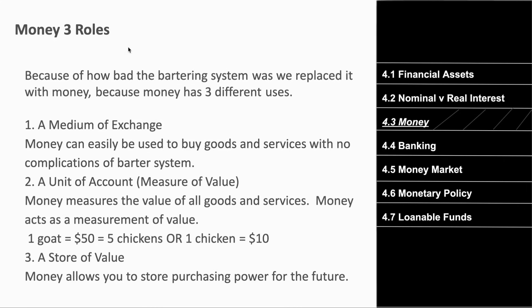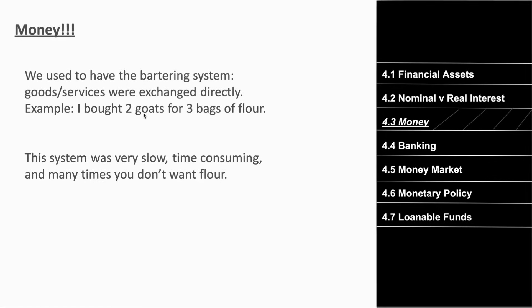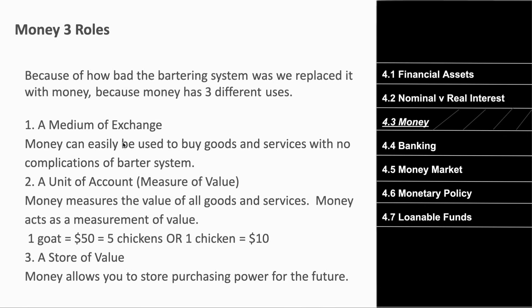Money makes the barter system much better. It has three main advantages. First, it's a medium of exchange — money can be used to buy goods and services without complications. The person with two goats might not want flour, but they would want money because you can exchange money for anything: gummy bears, a car, a house. You can't do all that with three bags of flour.